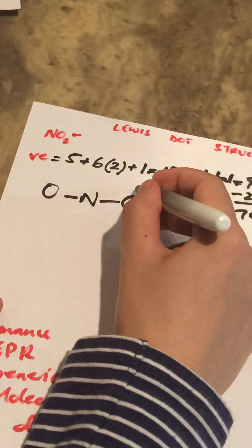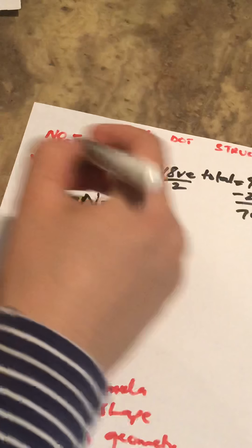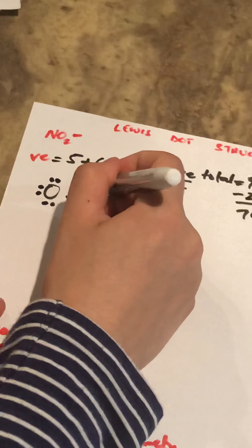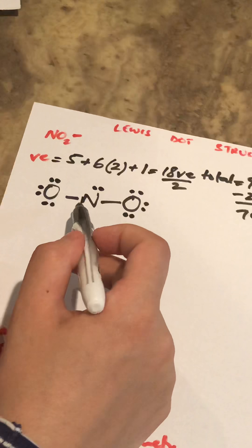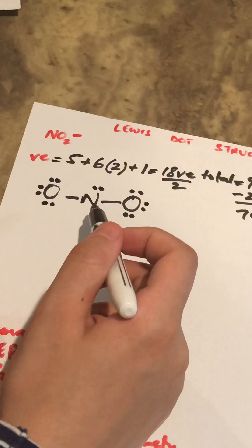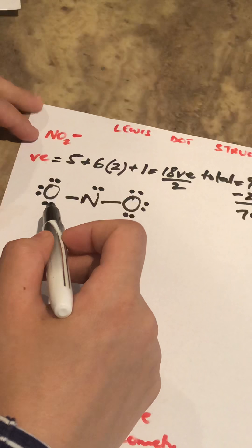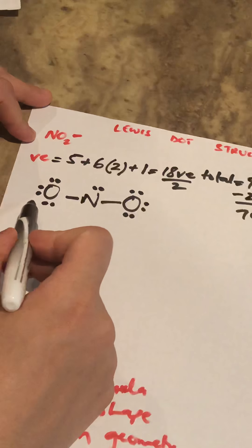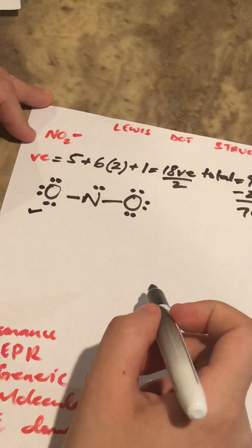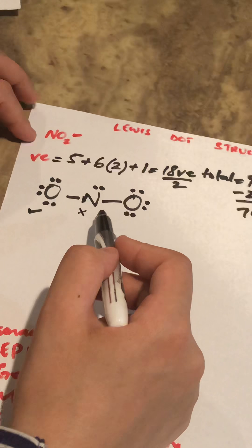Start distributing the seven remaining electron pairs on the outer atoms before the central atom. Fill in three pairs on one oxygen and three on the other — that's six pairs — then place the seventh pair on the central nitrogen. Now check the octet: both oxygens have eight electrons and are satisfied, but nitrogen only has six, meaning the structure is not yet correct.